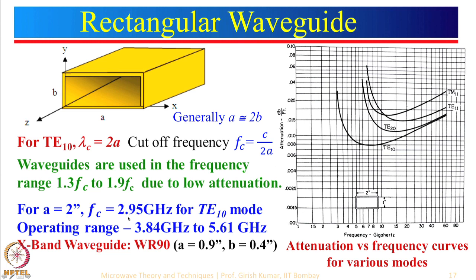However, you cannot use the waveguide at 3 GHz or just above cutoff. Looking at the attenuation curve versus frequency, the attenuation is relatively very high near the cutoff frequency of 2.95 GHz and decreases as frequency increases. In a particular region the attenuation becomes very small — much lower than even a coaxial line. In general, rectangular waveguides have much lower losses compared to coaxial line or microstrip line.